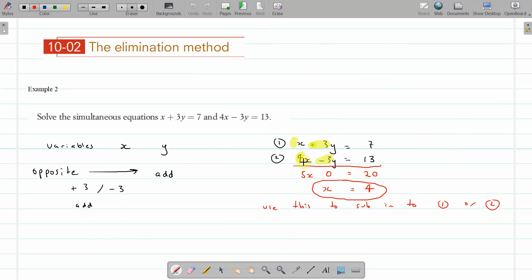So x equals 4, and then I'm going to sub it into here. So instead of 4x, it's 4 times 4 minus 3y equals 13. So that's equation 2. And put 4 instead of x. 4 times 4 minus 3y.